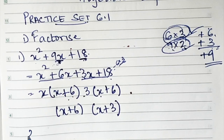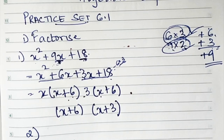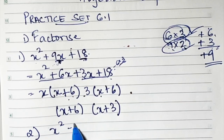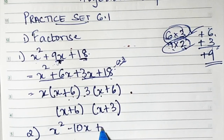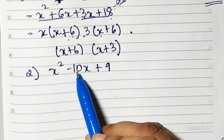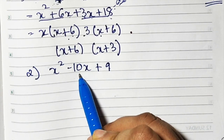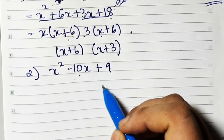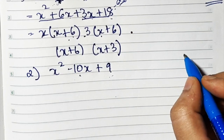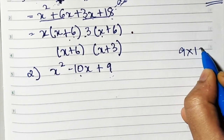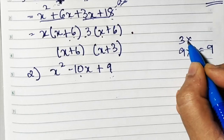I hope this is clear. Now we'll do sum number 2. Sum number 2 says x squared minus 10x plus 9. Now here you have to break minus 10x — that is, split the middle term — and the product of those two numbers should be 9. So the factors: 9 ones are 9 and 3 threes are 9.